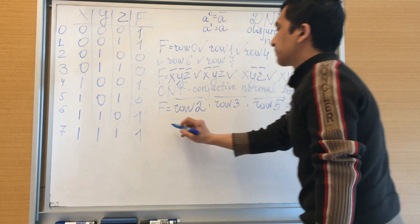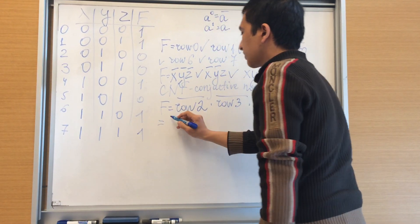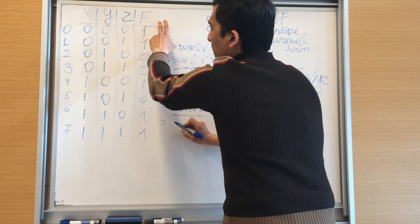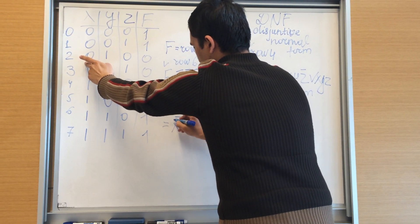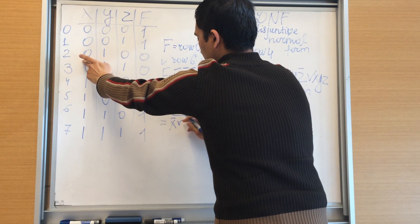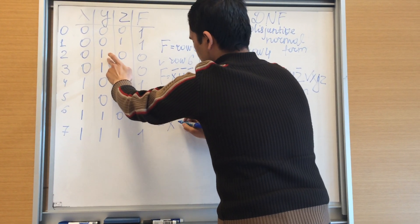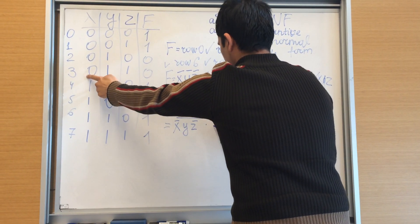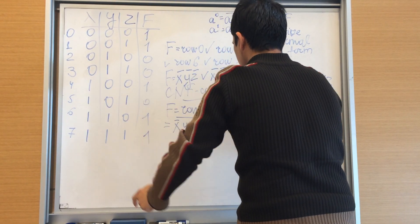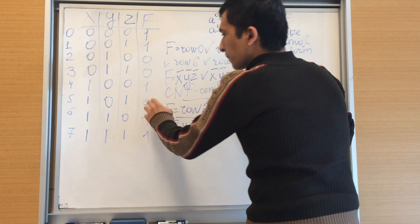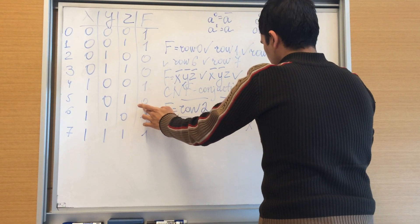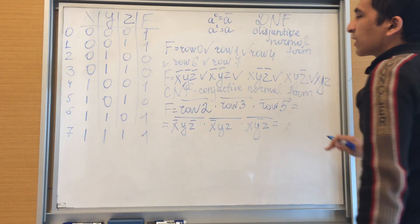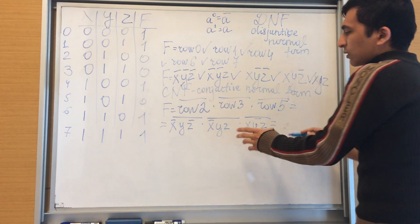For row 2: X negated or Y or Z negated, X negated Y Z, row 5: X Y negated Z. And according to De Morgan's law, we can simplify this expression as well in order to get rid of the negation.